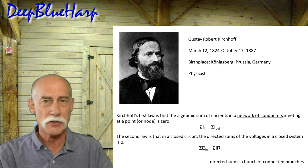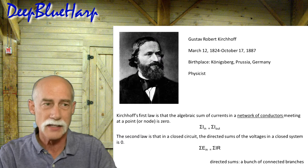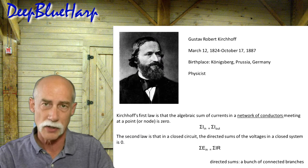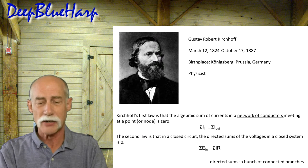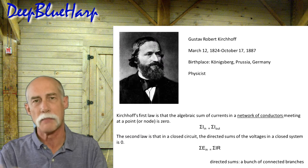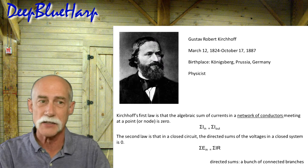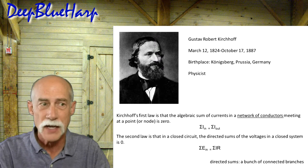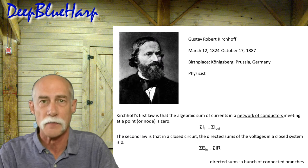Kirchhoff has two laws we have to deal with. First, in a network of conductors at any particular node, the currents must sum to net zero — what goes in must come out, and the balance has to be zero. Second, for a closed system, the directed sums of voltages need to add up to zero. Directed sums is essentially a math concept describing a bunch of connected branches.